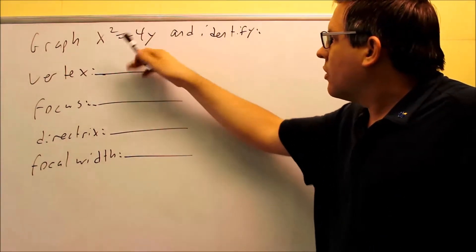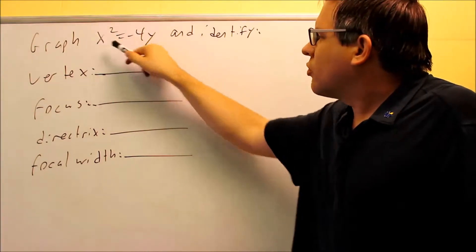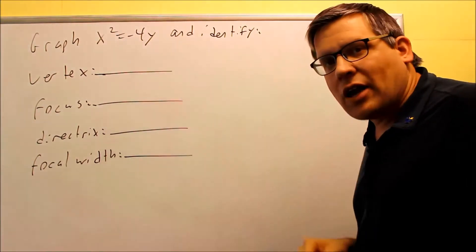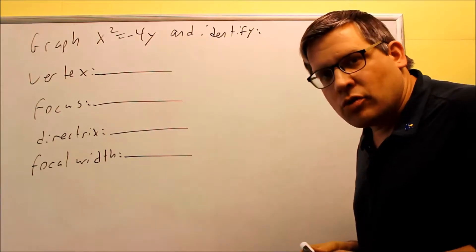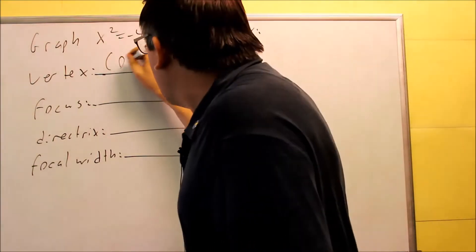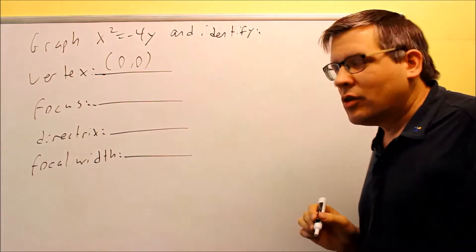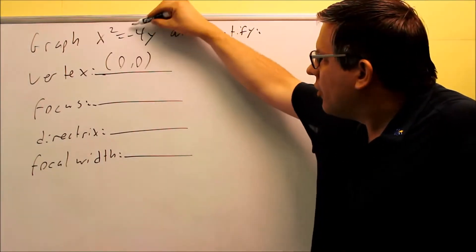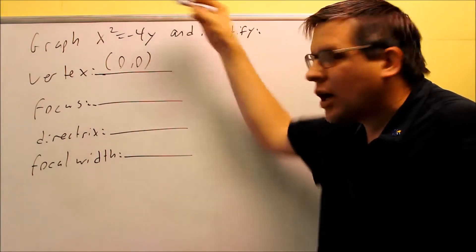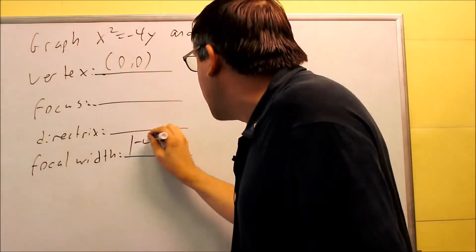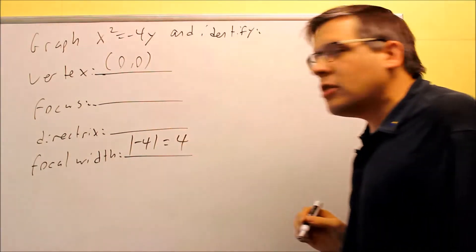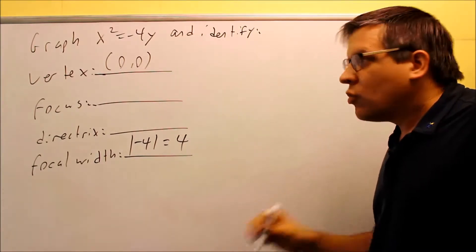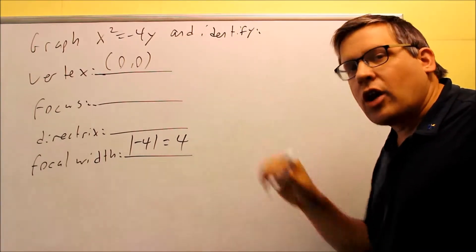Again, we see that there are no parentheses around the x or the y, so I know for sure the vertex is going to be at (0, 0). That's the first thing we can get from the formula itself. Next, we can find the focal width — that's the absolute value of the number in front of the non-squared variable, so the absolute value of negative 4 is going to be positive 4. Those two pieces of information you can always get right away without looking at the graph.